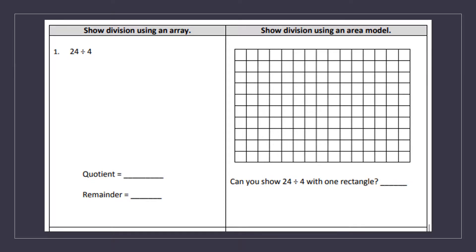For this problem, we are going to solve division using an array. So in the first problem we see 24 divided by 4. So I am going to make four groups of something to make 24. So I have one, two, three, four. There are my four groups, and I'm going to add and count until I get to 24.